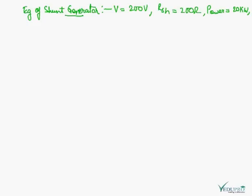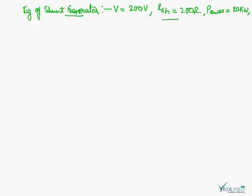So these are the things which are given. Now we have to find out the solution. So the solution here: IA is equal to IL plus ISH. It is a shunt generator, so armature current will be load current plus shunt current. Power delivered to the load is V into IL, and power delivered to the armature is EG into IA.